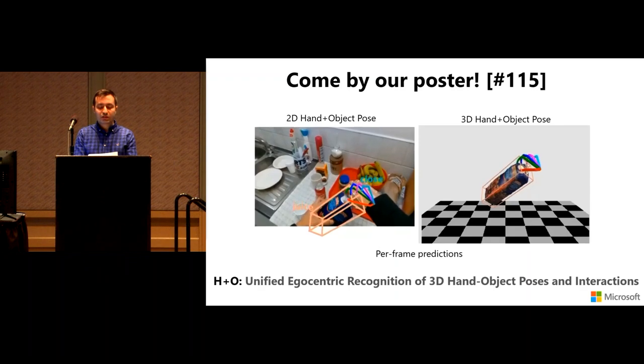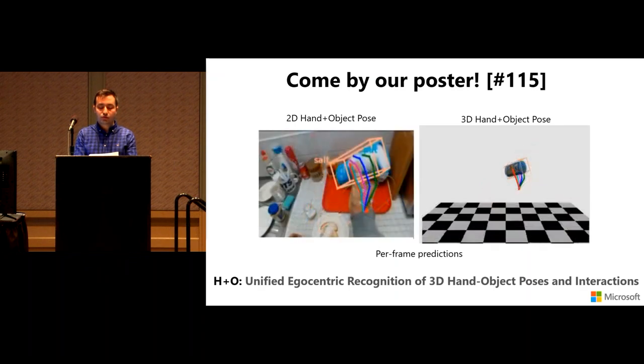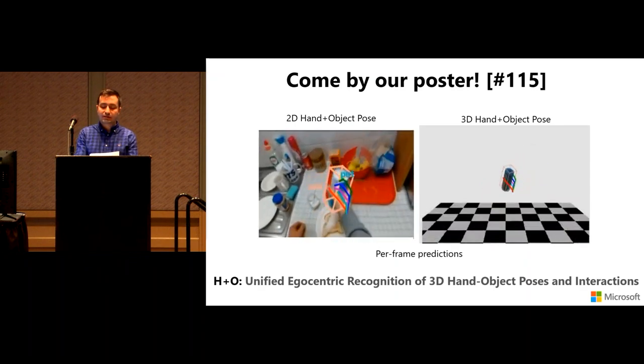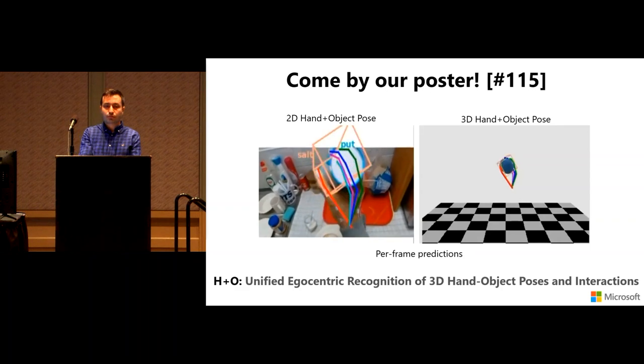Our unified framework achieves better overall performance than dedicated individual networks. In state-of-the-art comparison on the First-Person Hand Action dataset, we achieve state-of-the-art on diverse tasks even compared to depth-based approaches with ground truth pose annotations, while running at real-time speeds. Please come to poster 115 for more information.